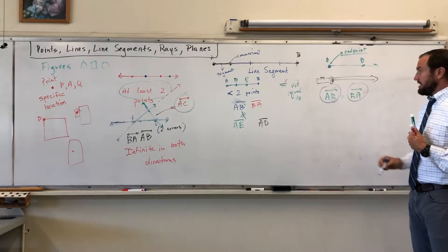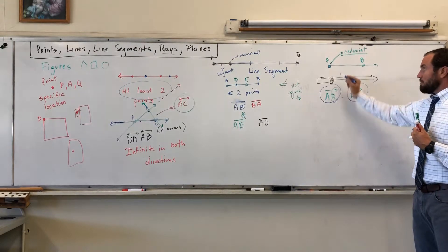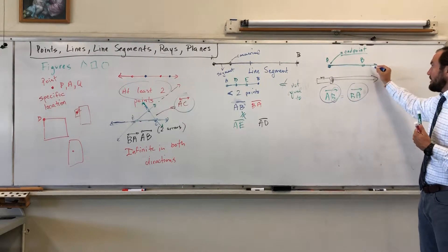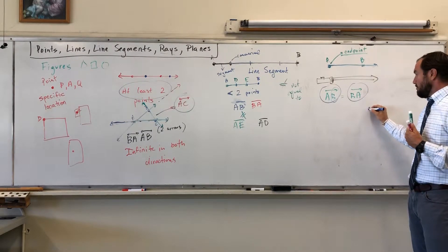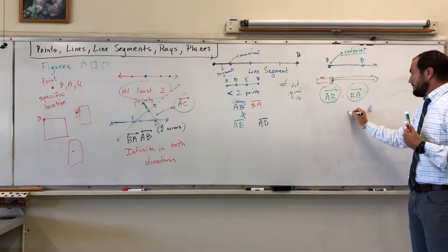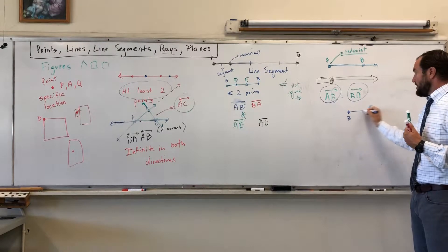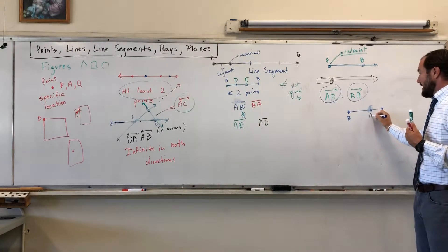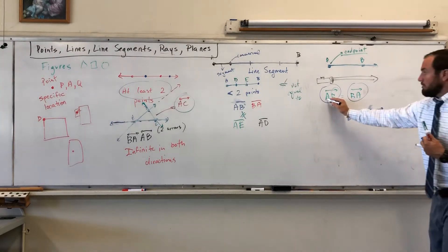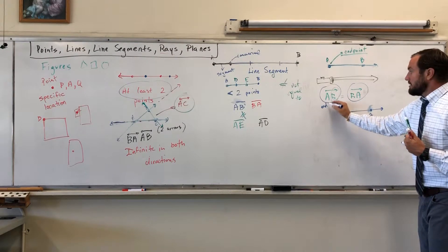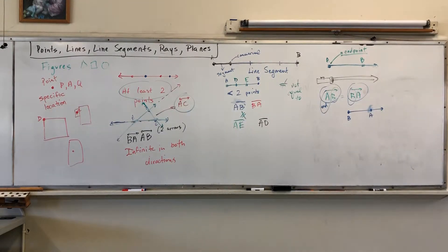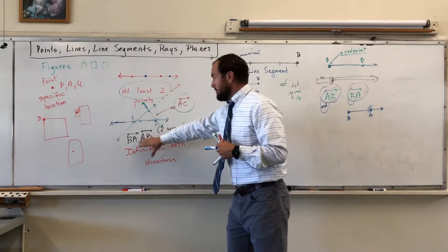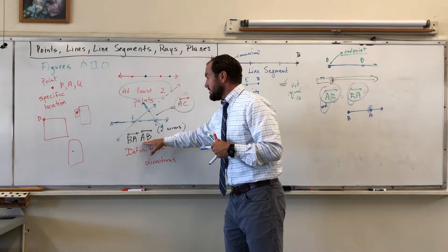Here's the difference: ray AB has its endpoint at A and goes in the direction of B — the arrow is over the B. Ray BA has its endpoint at B and goes in the direction of A — the arrow is over the A. So this ray started at B and goes toward A. A is the endpoint here; B is the endpoint there. That's the difference.